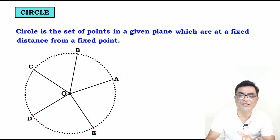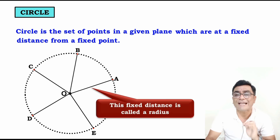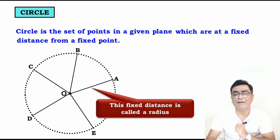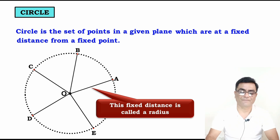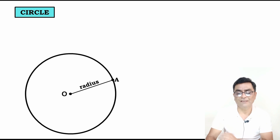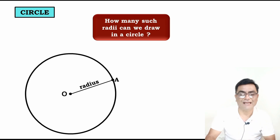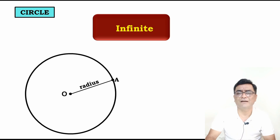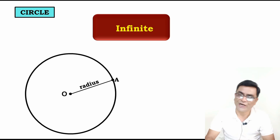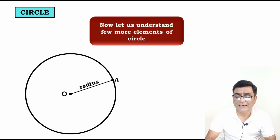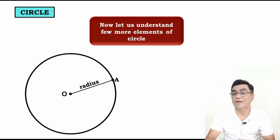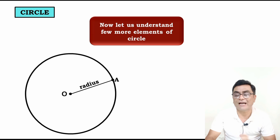How many such radii can we draw in a circle? The answer is infinite — we can draw unlimited radii in a circle. Now let us understand a few more elements of a circle — the parts of a circle.